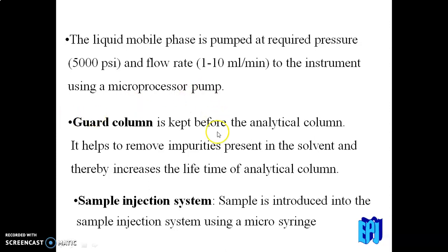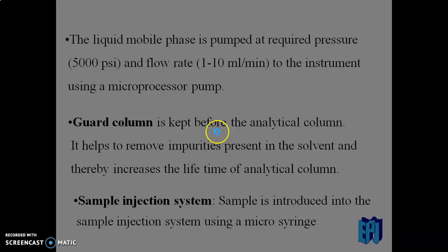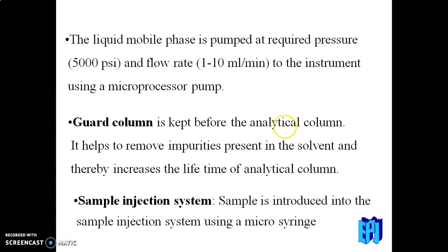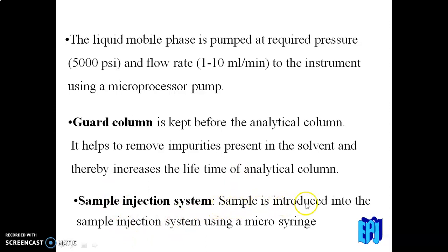The solvent passes through the guard column. The guard column is kept before the analytical column and helps to remove impurities present in the solvent, thereby increasing the lifetime of the analytical column. The sample is then introduced into the system using a micro syringe via the sample injection system (SIS).